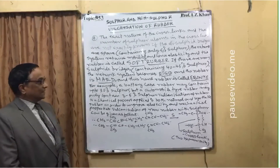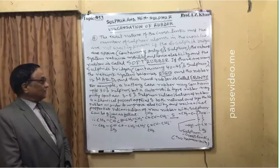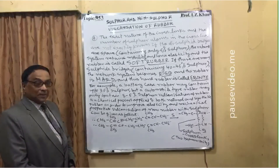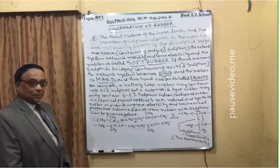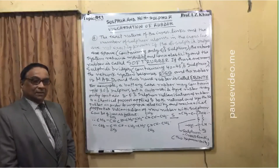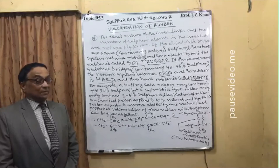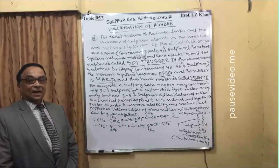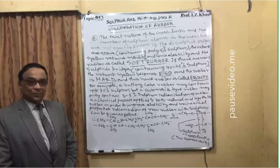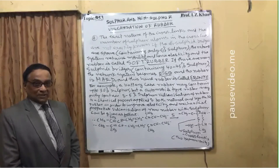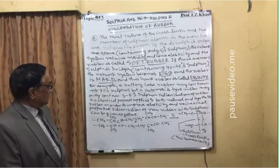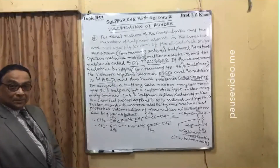For example, a battery case rubber may contain up to 30% sulphur, while automobile tyre rubber may contain only 3–5% sulphur. Vulcanization is a chemical process applied to both natural and synthetic rubber. Unless rubber — natural or synthetic — goes through this chemical process of vulcanization using sulphur or non-sulphur ingredients, its quality will not be improved and it will be useless. This is why vulcanization is essential to improve the elasticity and mechanical properties of rubber.